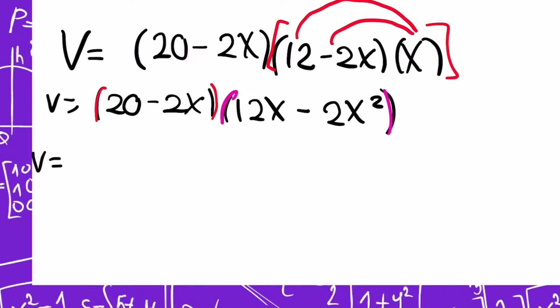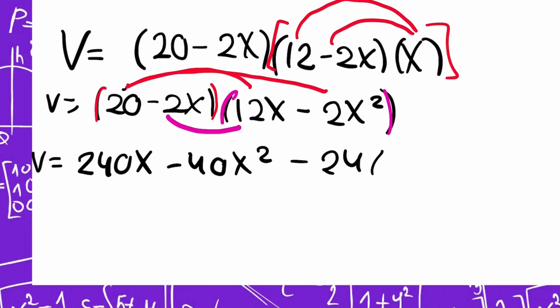Okay, let's start. 20 times 12x, that is 240x. Now I have 20 times minus 2x squared, that is minus 40x squared. And now I have the other part, which is minus 2x times 12x, and that is minus 24x squared. Then minus 2x times minus 2x squared, that is positive 4x cubed.